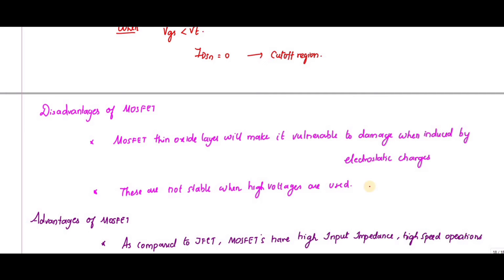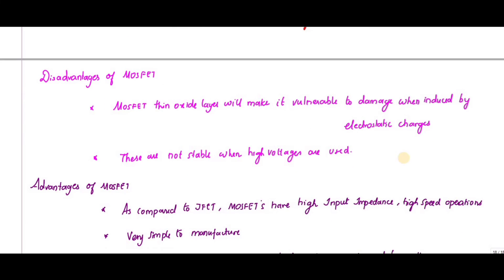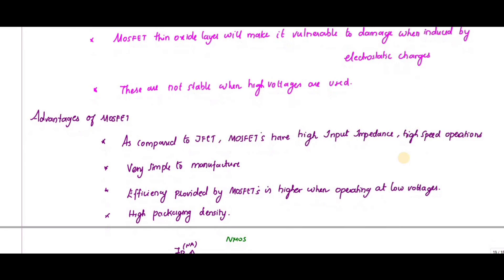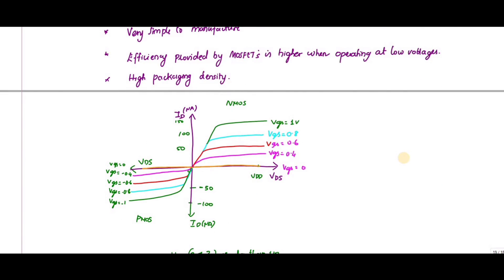Disadvantages of MOSFET: since the MOSFET has a thin oxide layer it is vulnerable to damage from electrostatic charges, and it is not stable when high voltages are used. Advantages of MOSFET compared to JFET: it has very high input impedance, high speed of operation, is simple to manufacture, has high packing density, and provides higher efficiency when operating at low voltages.